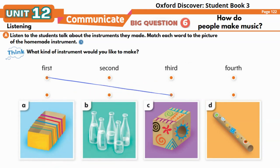Our second instrument is like a didgeridoo. I found a long wrapping tube at home. Together we used stickers to decorate the tube. To play it, I talk or blow over the top opening.